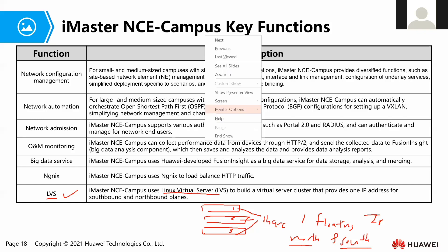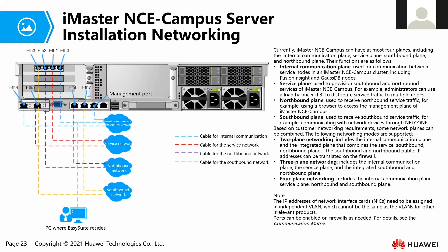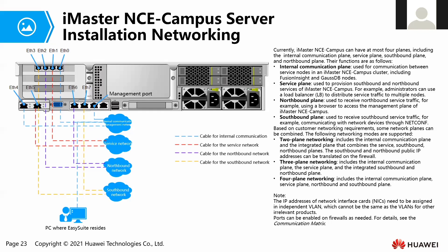Next is about the NCE Campus installation networking. When we deploy NCE Campus, we need to know there are four types of planes. The first plane is the internal communication plane, the second is the service plane, the third is the northbound plane, and the fourth is the southbound plane. Each plane will use different interfaces depending on how you design. The internal communication plane is used for communication between service nodes in iMaster, and also for communication between Fusion Insight and the databases.